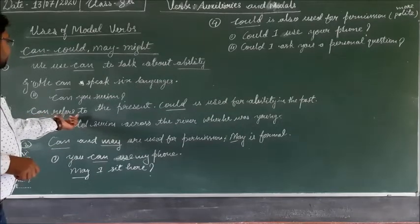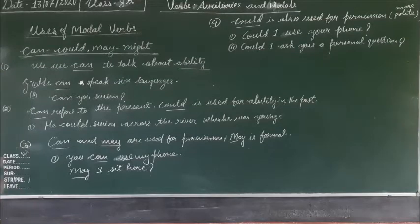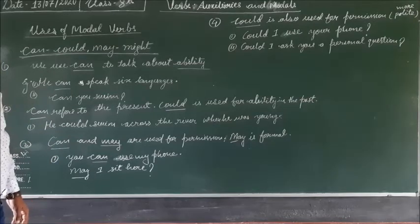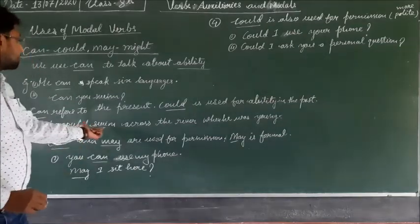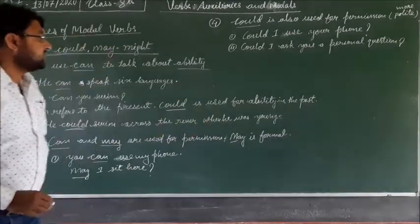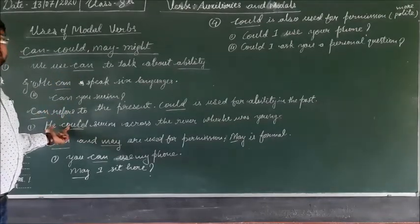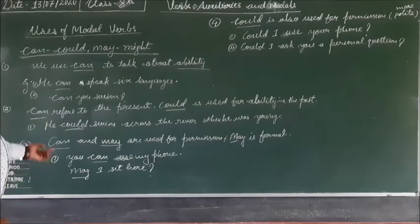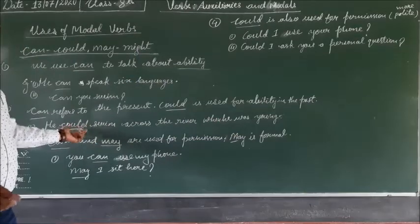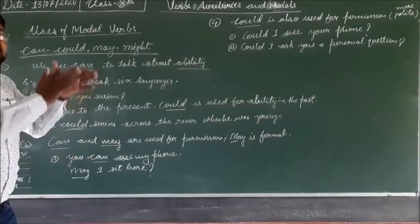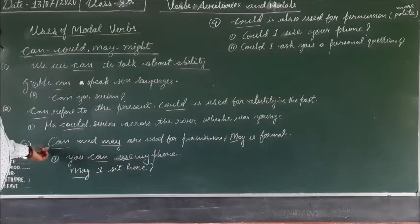Can refers to the present, while could is used to express ability in the past. Could is the past tense of can. Here in the example: 'He could swing across the river when he was young.' We are talking about his past ability, so could is used to express ability in the past.